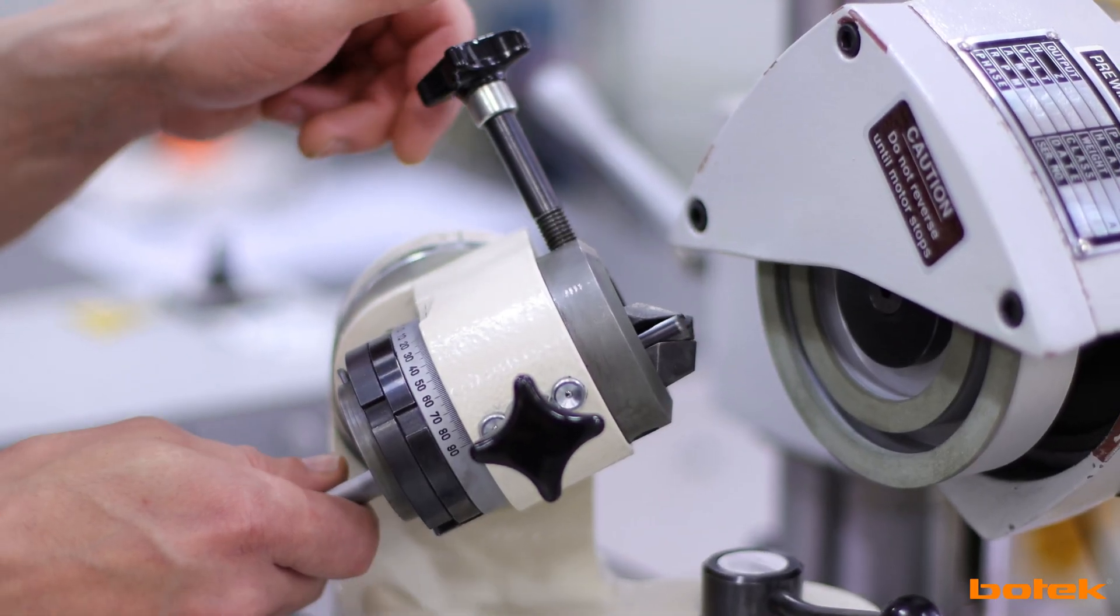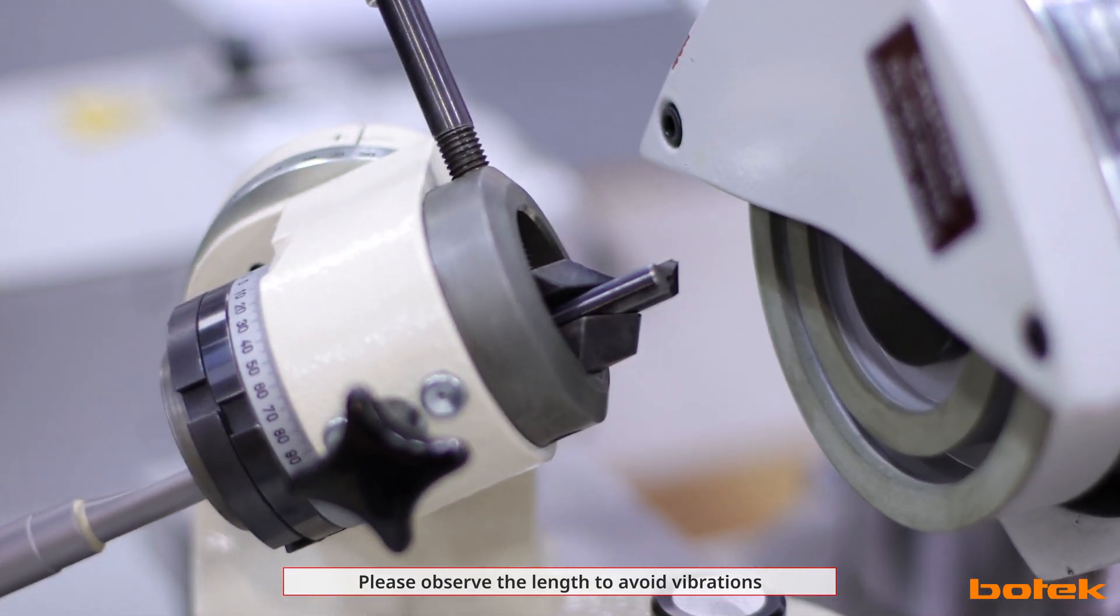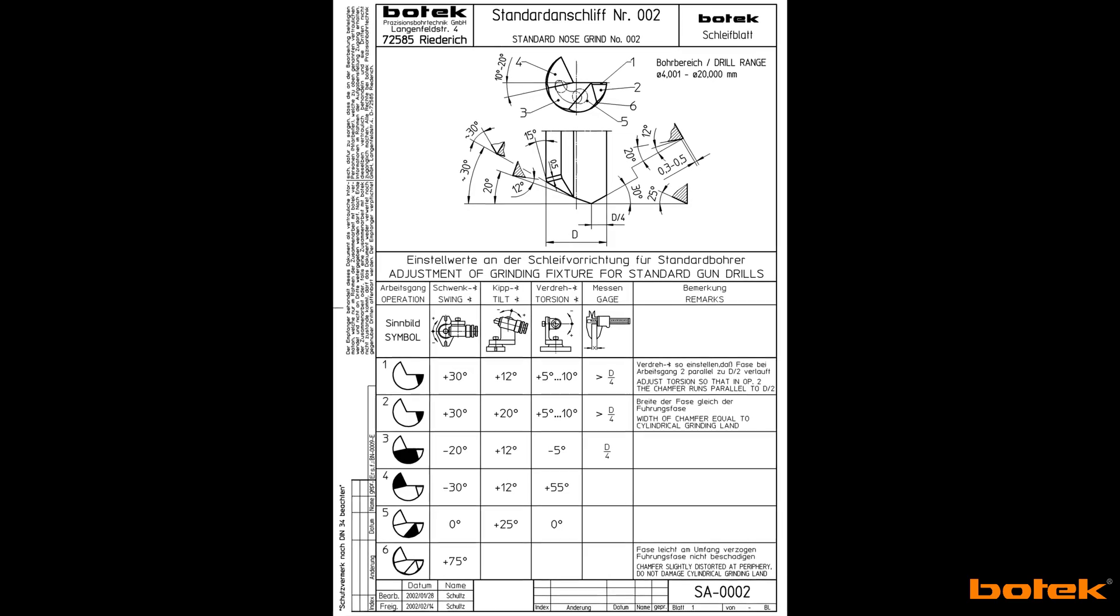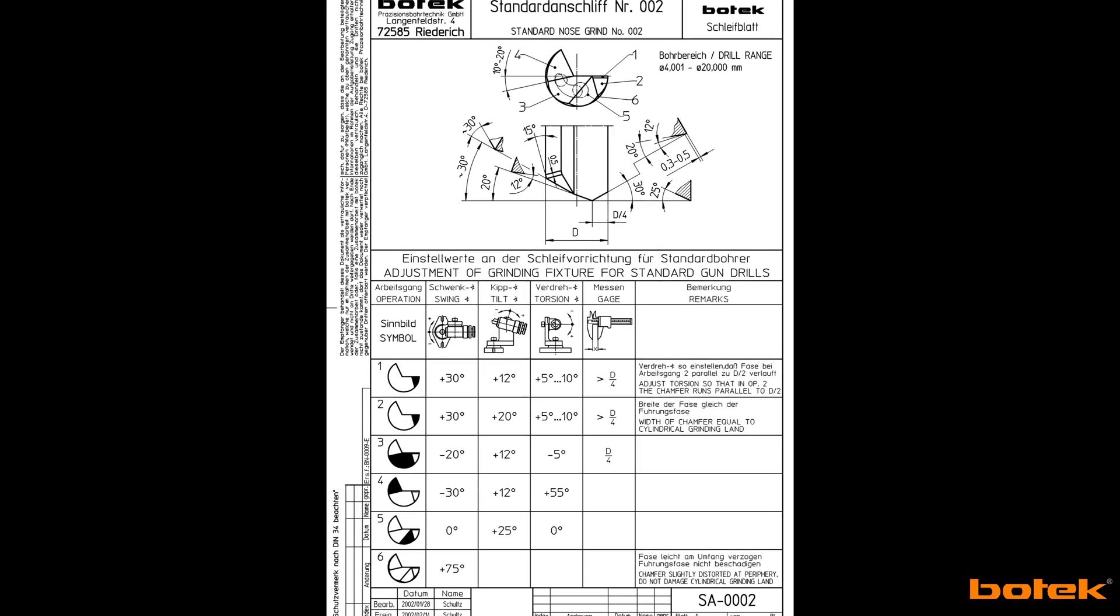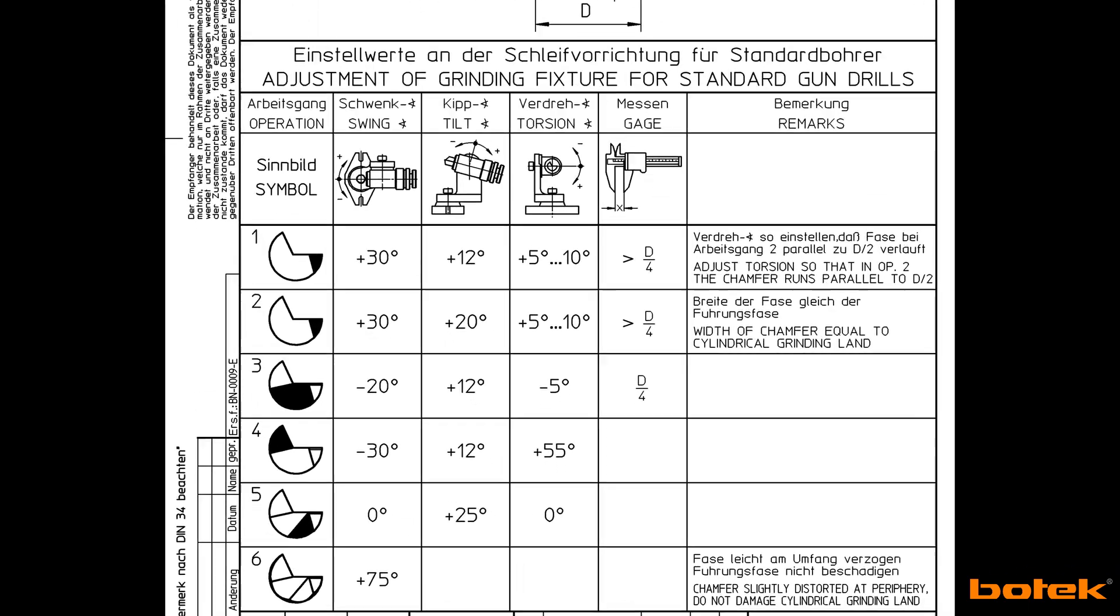Clamp the worn tool in the grinding fixture. In our example we grind the tool diameter of 12 mm. Here you can see the grinding instructions for the standard nose grind number 002.